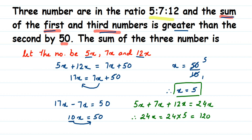So if you add all three numbers, the sum is equal to 120. The key thing to remember is you have to identify the relationship given and form an equation — once you have the equation, you can solve it. If you have any other questions or doubts, you can drop a comment. Thank you so much for watching.